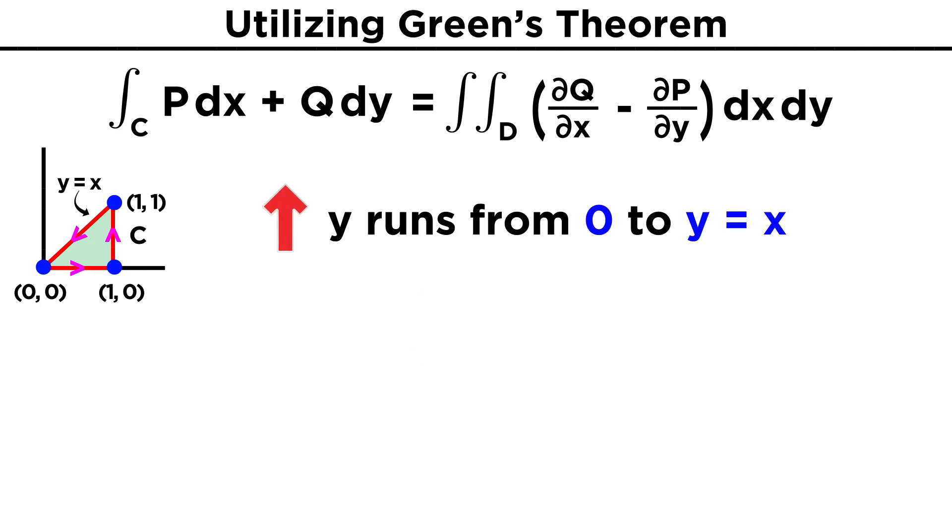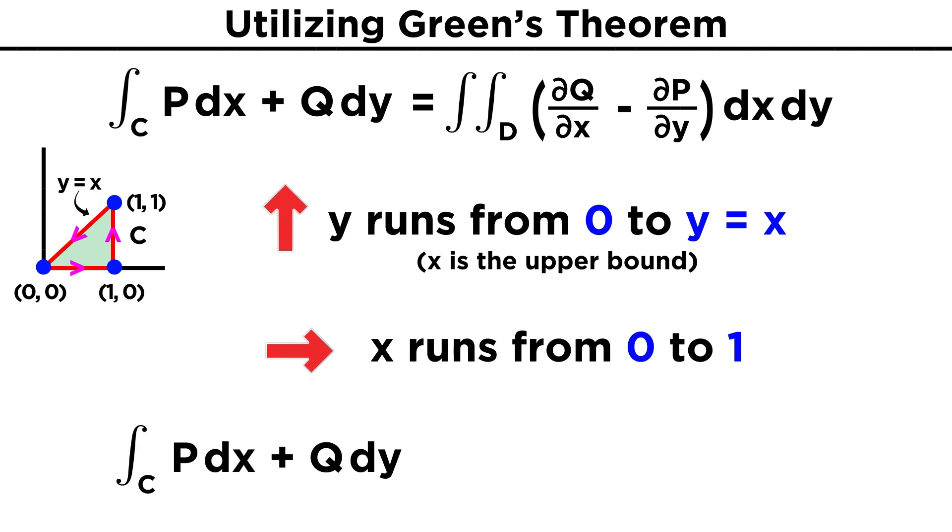If we want to integrate y first in our double integral, y will run from zero to the curve y equals x, so x is the upper bound. Meanwhile, x will simply run from zero to one. Thus the line integral over C of Pdx plus Qdy will be the integral from zero to one, and then from zero to x, of dQ/dx minus dP/dy dy dx.